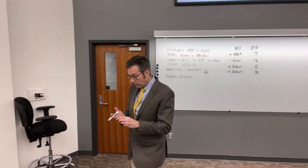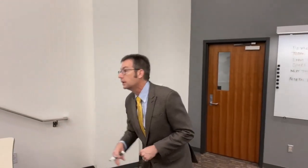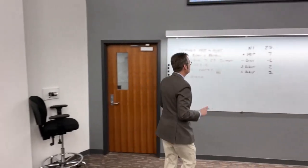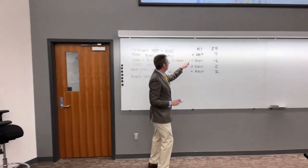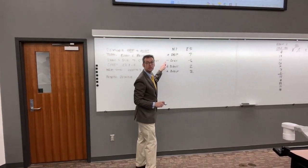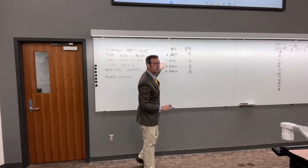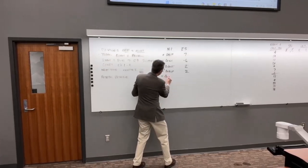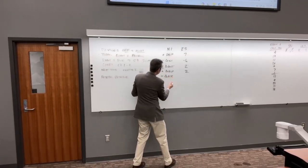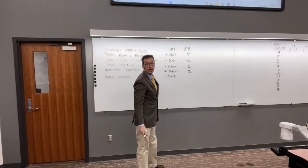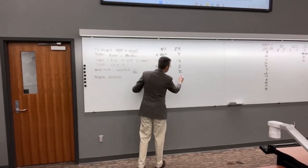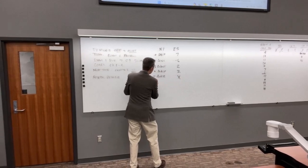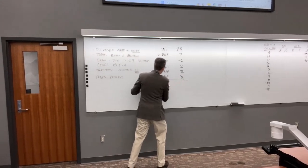There's one current account we haven't talked about — accounts receivable. We subtract the change in asset accounts because when assets go up, cash goes down. I'm going to say minus the change in accounts receivable. We don't know that yet, so I'll put an X there.